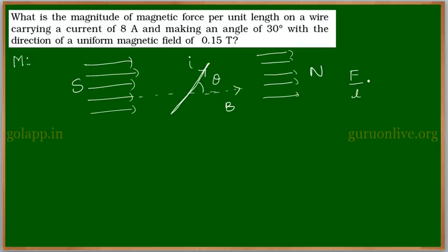We need to find out the force per unit length. That is our motive. Now under investigation, I am writing the given things: the current flowing in the straight conductor I is equal to 8 amperes, and the angle between the field and the current-carrying conductor theta is equal to 30 degrees, and the magnetic field B is equal to 0.15 tesla.